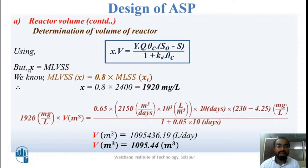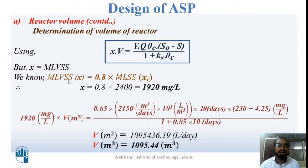Here X in the equation is the MLVSS. We know that MLVSS is always 80% of MLSS, and we know the value of MLSS, so we can calculate MLVSS by multiplying 0.8 × 2400.